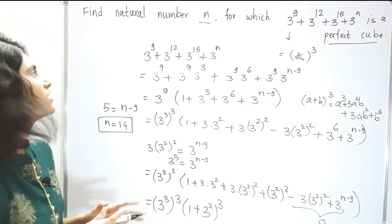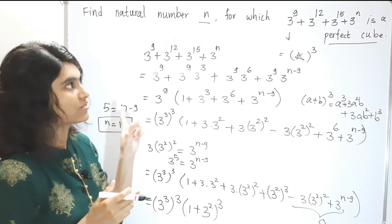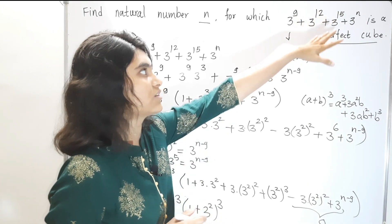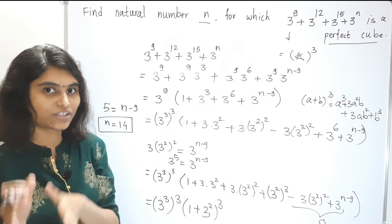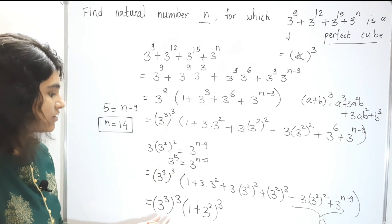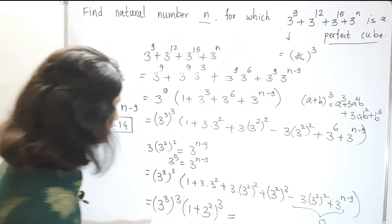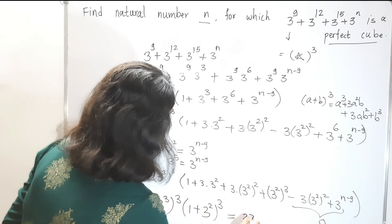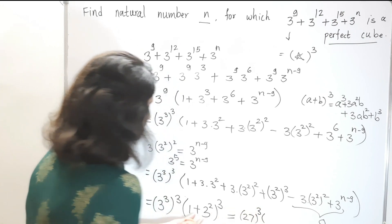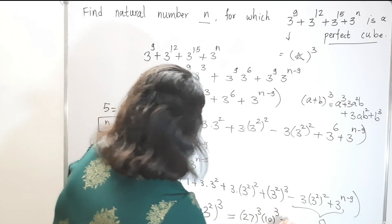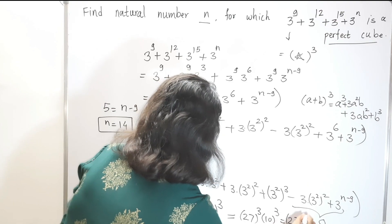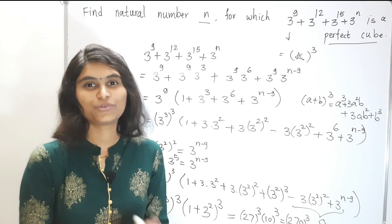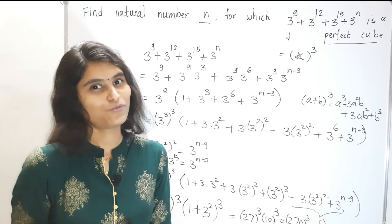So the answer is n = 14. For this value of n, 3^9 + 3^12 + 3^15 + 3^14 is a perfect cube. The cube root is 3^3 × 10 = 27 × 10 = 270. So that number is just equal to 270, and the expression equals 270^3. I hope you have enjoyed this video. Thank you for watching.